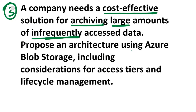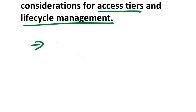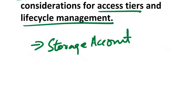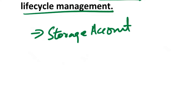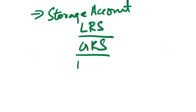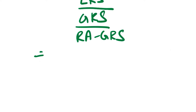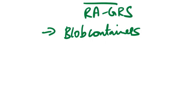Next question: a company needs a cost-effective solution for archiving large amounts of infrequently accessed data. Propose an architecture using Azure Blob Storage, including considerations for access tiers and lifecycle management. First, create an Azure Storage Account with the appropriate redundancy level based on your durability and availability requirements — such as LRS (locally redundant storage), GRS (geo-redundant storage), or RA-GRS (read-access geo-redundant storage). Then organize your data by creating specific blob containers within the storage account for different types of archived data.